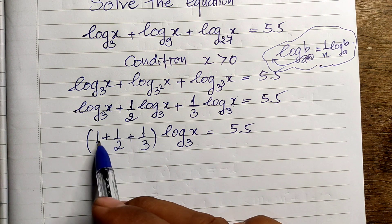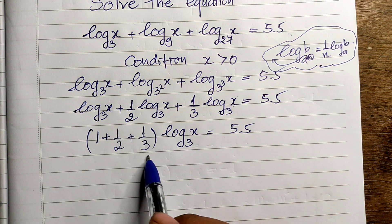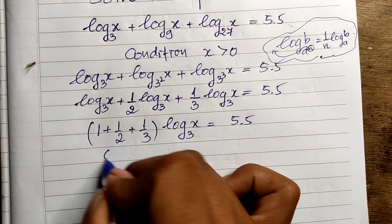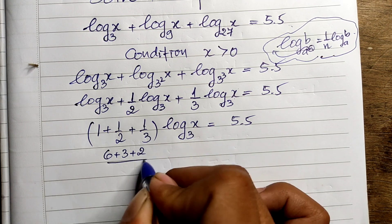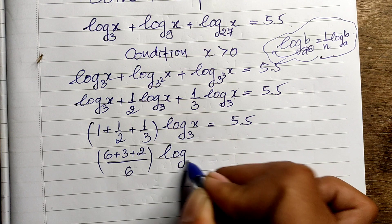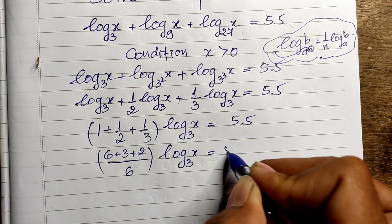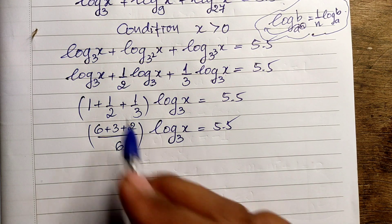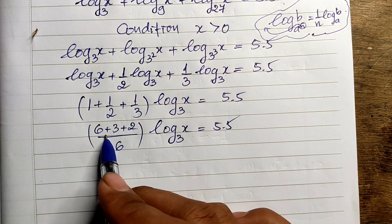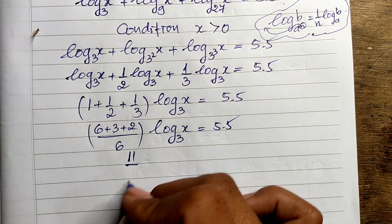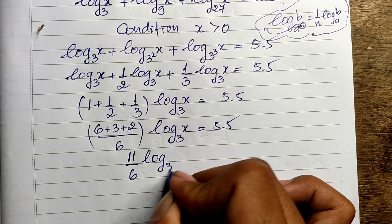For 1 plus one-half plus one-third, we use 6 as the common denominator. So we get 6 plus 3 plus 2, all divided by 6, multiplied by log base 3 of x, equals 5.5. That gives us 11 divided by 6, times log base 3 of x, equals 5.5.